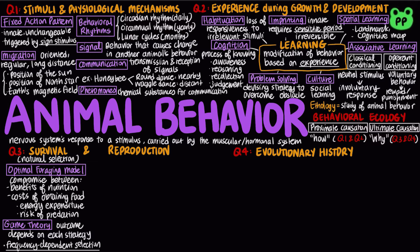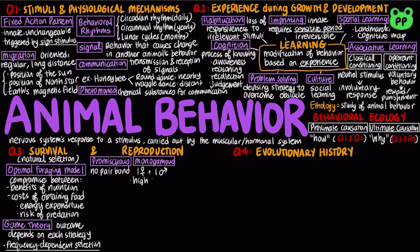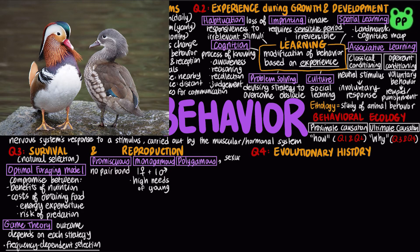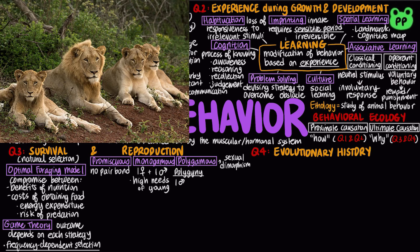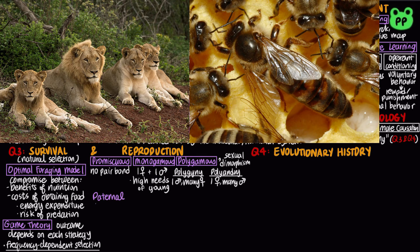The mating relationship between males and females varies greatly from species to species. In many species, mating is promiscuous, with no strong pair bonds or lasting relationships. In monogamous relationships, one male mates with one female, which occurs when there is high need for parental care of young. In polygamous relationships, an individual of one sex mates with several of the other sex, usually resulting in sexual dimorphism. Polygamous relationships can be polygynous — one male mates with many females, with males usually more showy and larger — or polyandrous, where one female mates with many males and females are often more showy. Polyandry is a rare mating system.